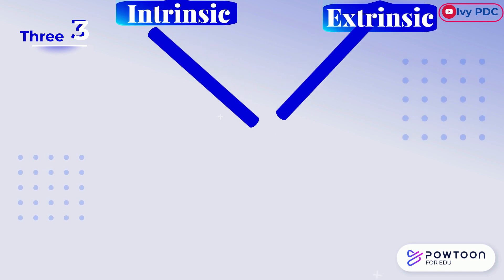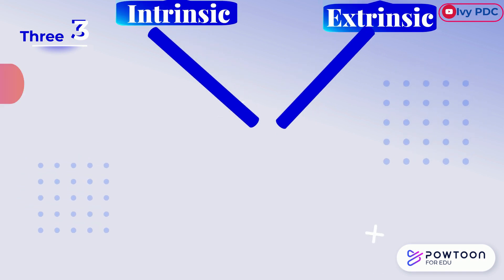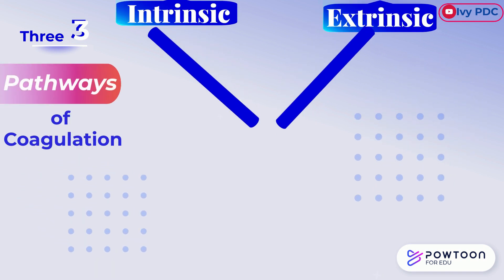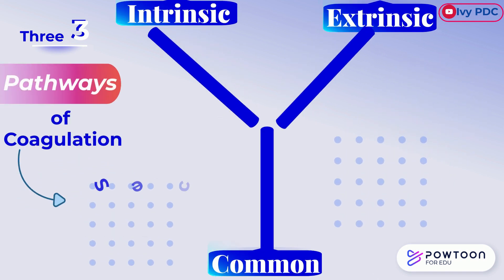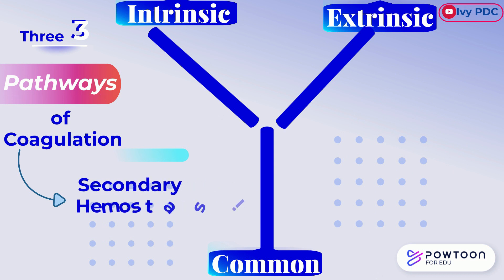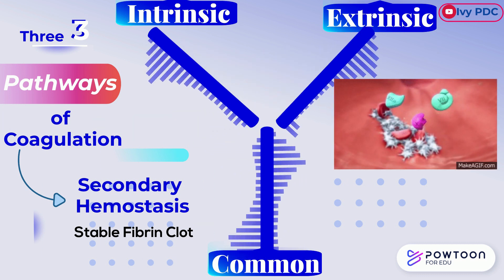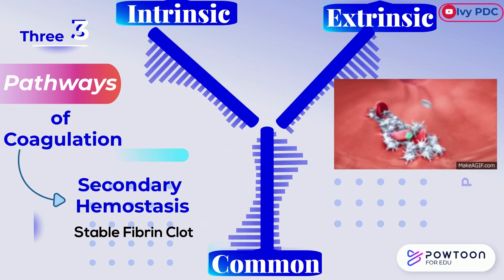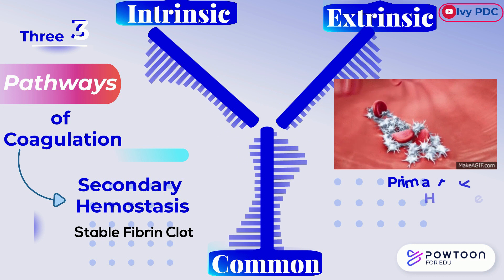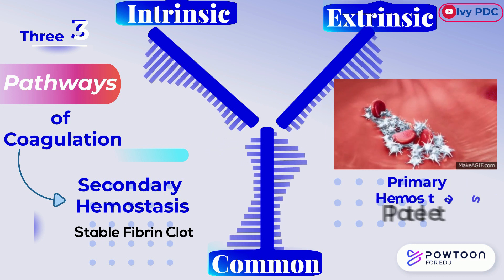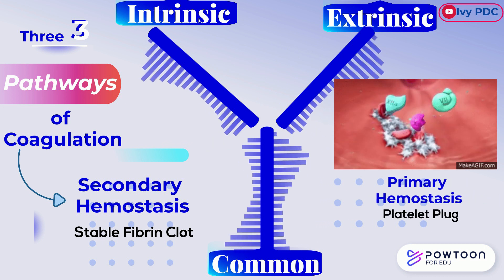Both the intrinsic and the extrinsic coagulation pathways lead to secondary hemostasis, namely the formation of the stable fibrin clot. The clot thus includes both the fibrin from secondary hemostasis and the platelet plug formed in primary hemostasis.